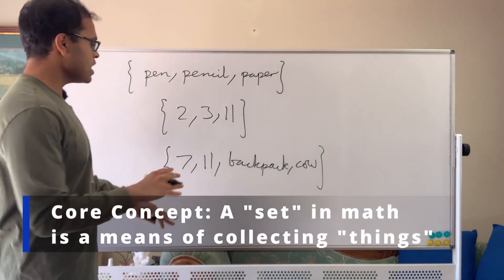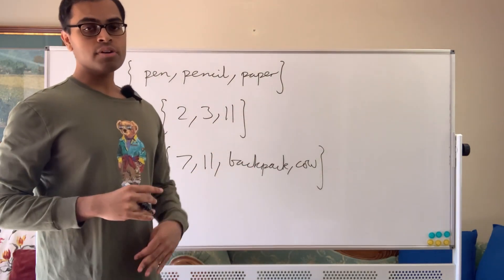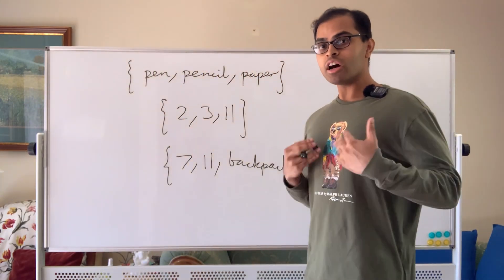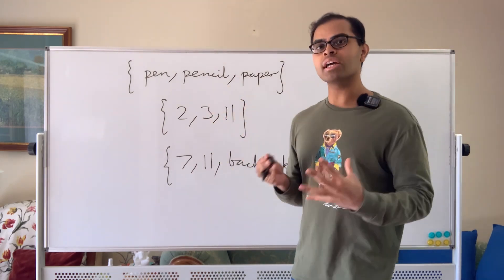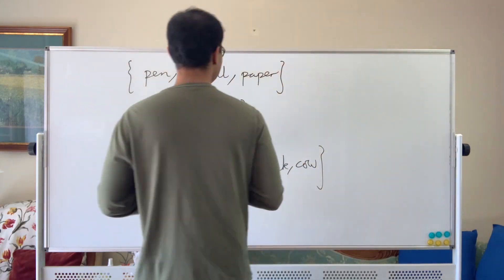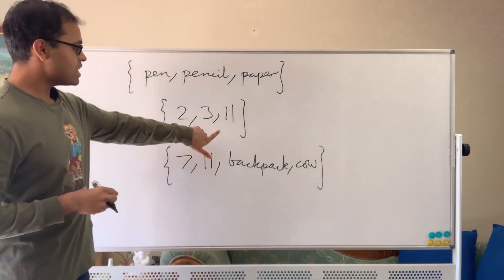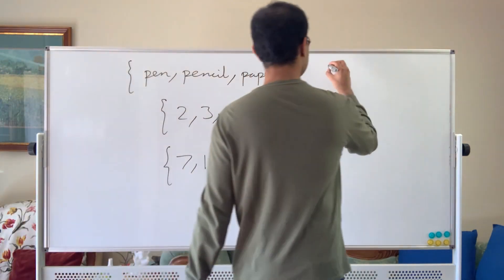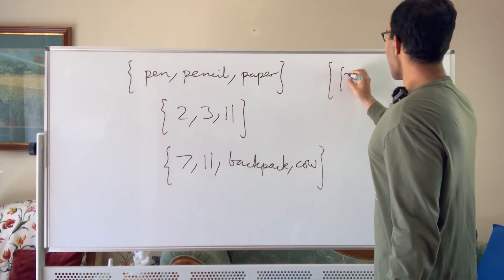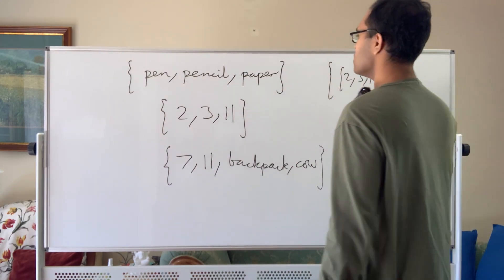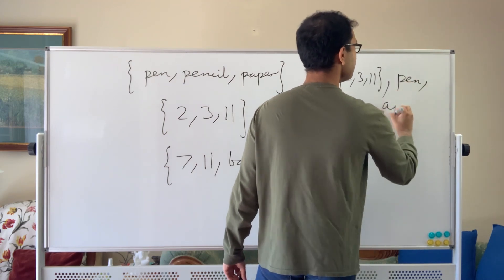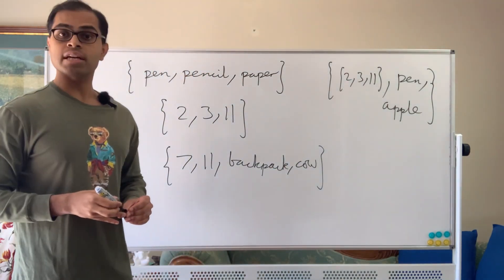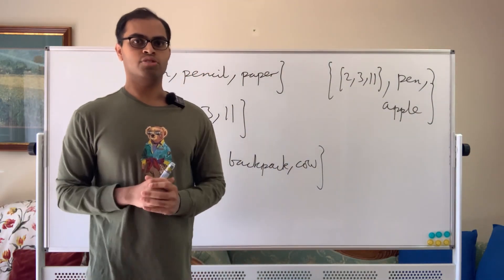We're going to talk about a really weird and very famous paradox called Russell's Paradox. In order to do that, I'm first going to talk about what kinds of sets we can construct. We can construct some pretty abstract sets — for example, we can throw a set in as an object inside another set. So we could have a set like {2, 3, 11, 10, apple}, which is also a set.